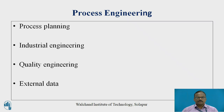Under process engineering, these are the inputs and outputs. Process planning is the input, industrial engineering is the input, quality engineering is the input, and external data is the input.